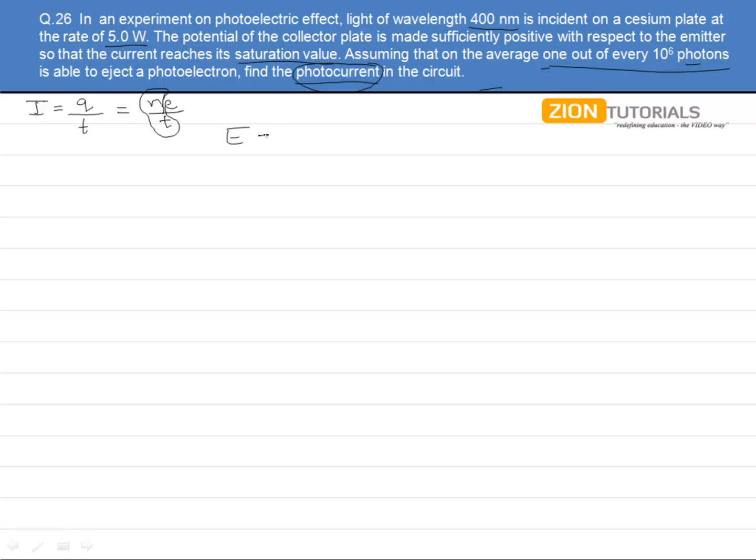We all know that the energy of one photon or each photon is given by hc by lambda. They have given us the lambda, so let us put that to find the energy corresponding to that photon. I have kept it like this just to avoid the calculations in case something gets cancelled in further calculations.